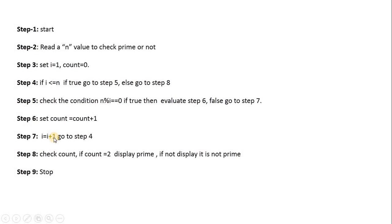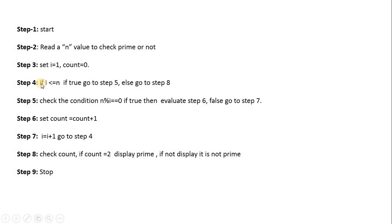Step 4: 4 ≤ 5 is true, go to step 5. Check 5 % 4 == 0: remainder is 1 — false. Go to step 7: i becomes 5. Step 4: 5 ≤ 5 is true, go to step 5. Check 5 % 5 == 0 — true. Count = count + 1; count was 1, now becomes 2. Step 7: i becomes 6. Step 4: 6 ≤ 5 is false, so go to step 8.